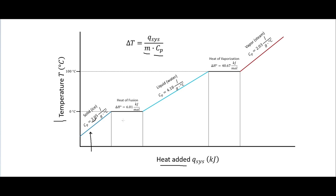When we get to 0°C we reach the heat of fusion. As we add heat the temperature will not go up — this is heat required to break the intermolecular forces between molecules and allow them to start sliding past each other and become a liquid. Liquid water has a specific heat of 4.18 joules per gram·°C, so while liquid we add heat and temperature steadily rises.